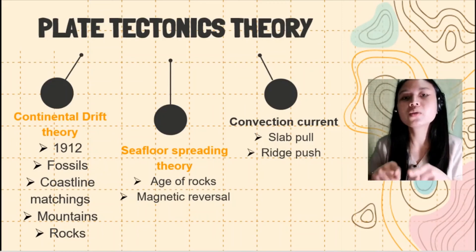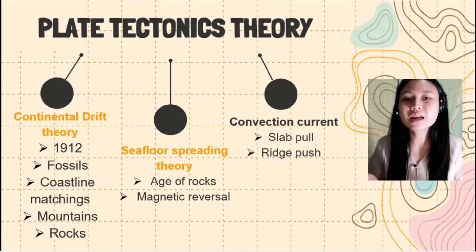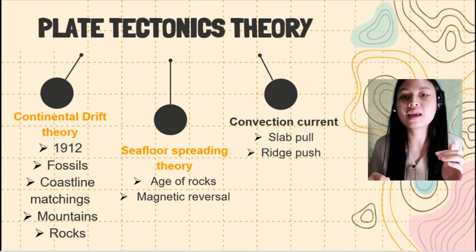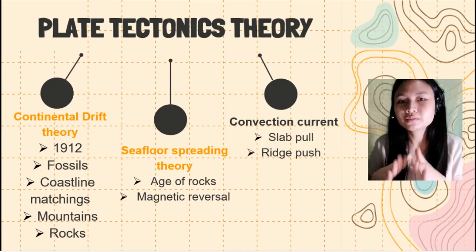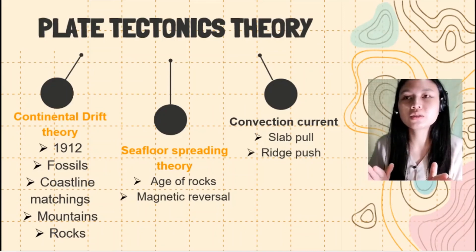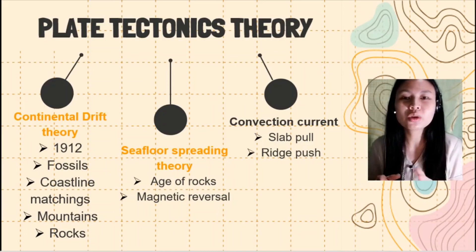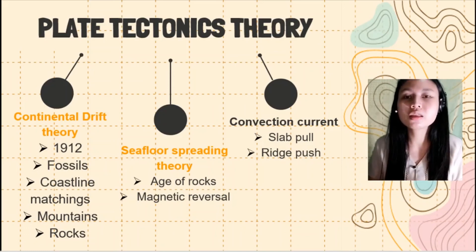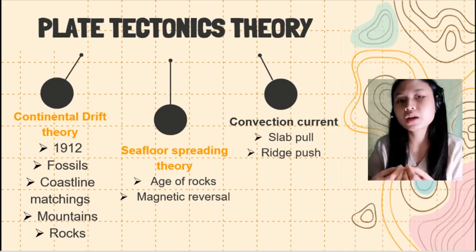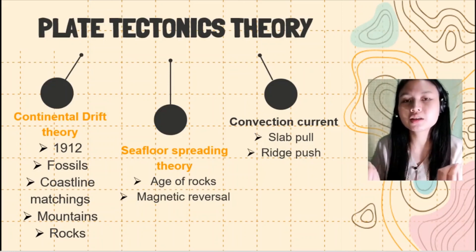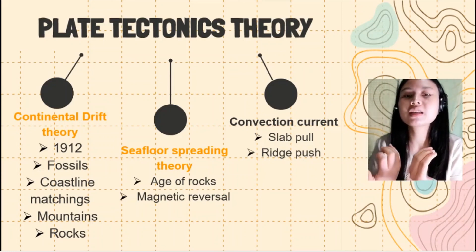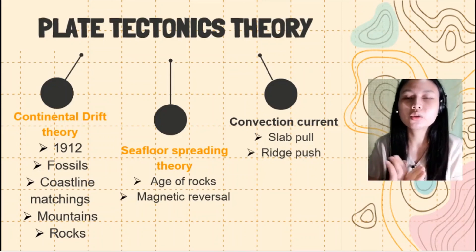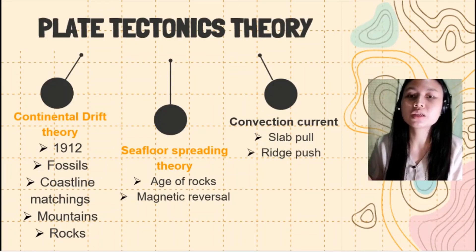And then, bakit gumalaw yung seafloor? It is because of the convection current in the mantle. Meron tayong force, driving force, para yung plates na nasa ibabaw ng mantle ay gumalaw. And because of that convection current, we have the ridge push in the oceanic ridge — that is where seafloor spreading occurs. And then, we have the slab pull of those lithospheric plates to the subduction zone.